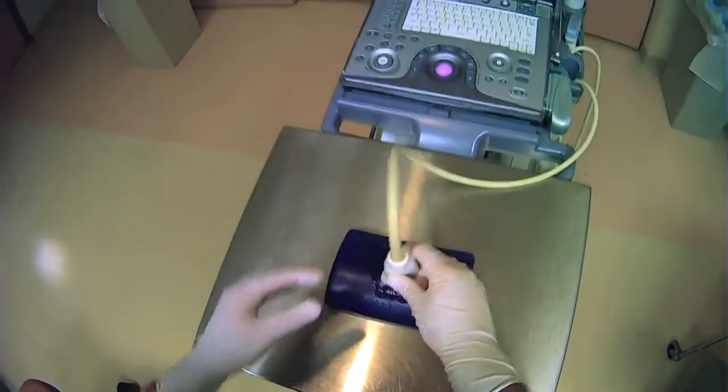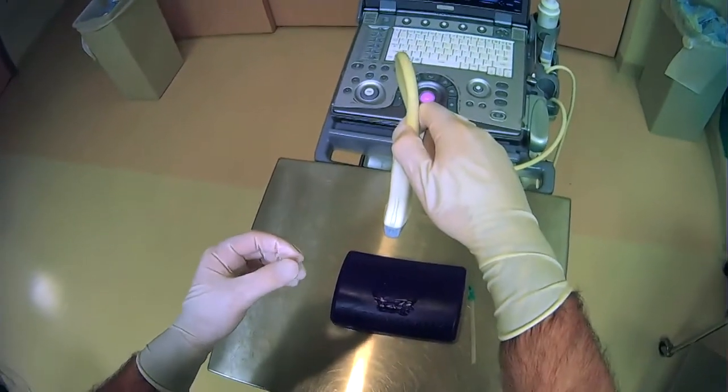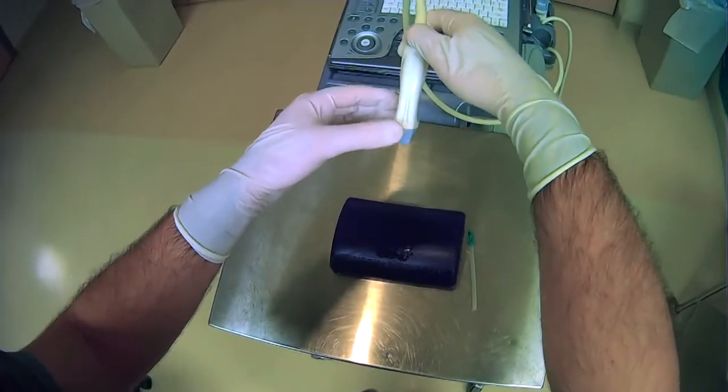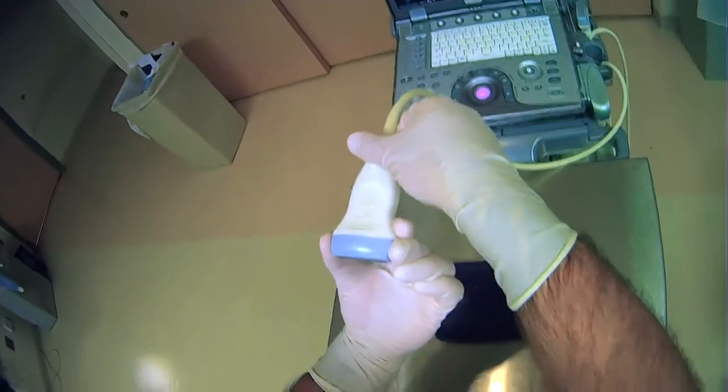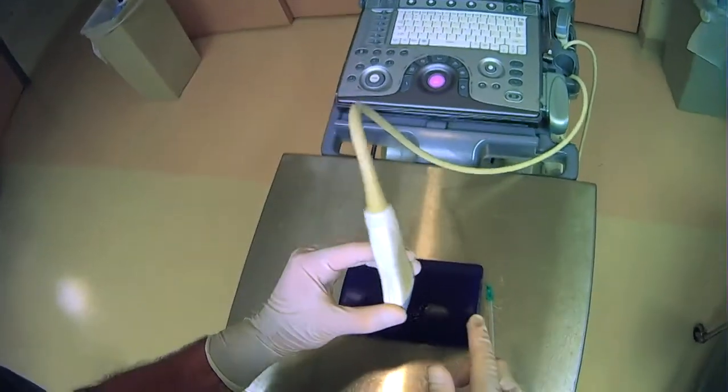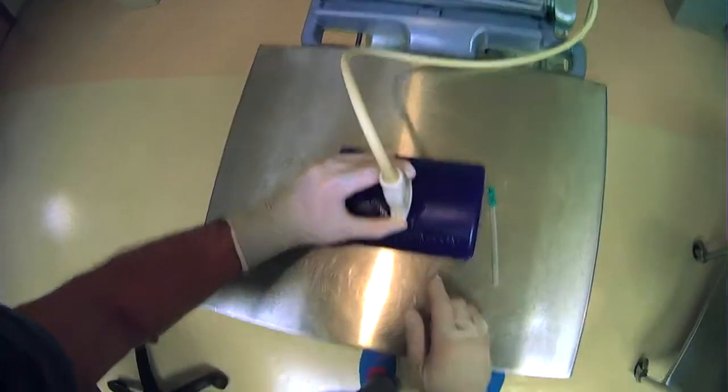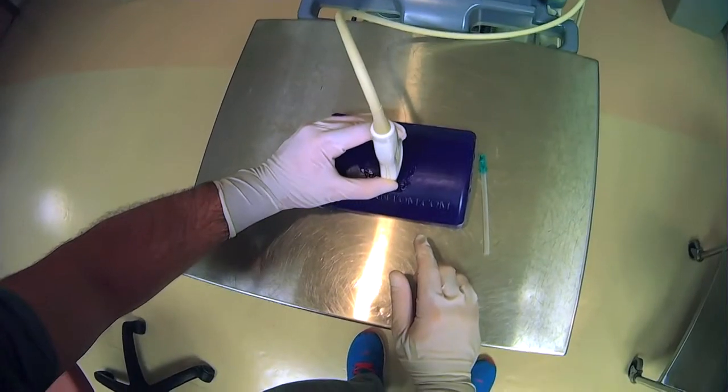You can apply the same concept to holding the probe in this orientation. You can put your thumb right here and you can put two fingers right here on the other side. And again, you can bring it down like this on the surface that you're going to be applying the ultrasound probe to.